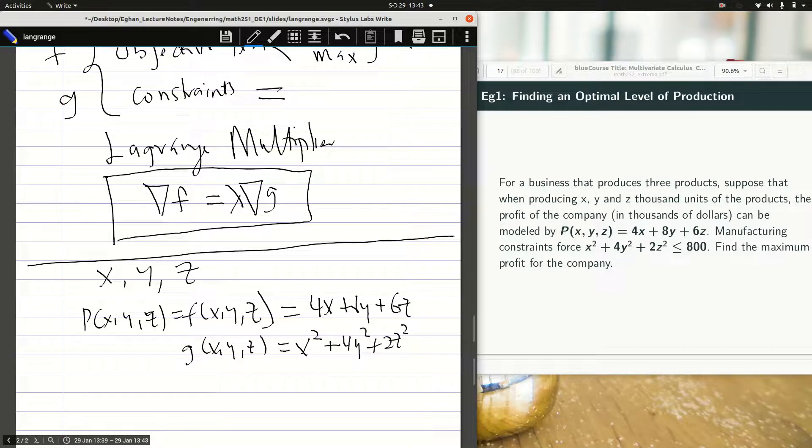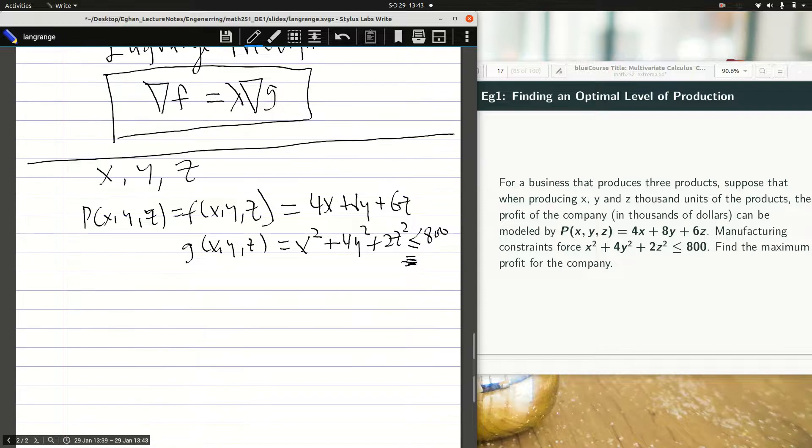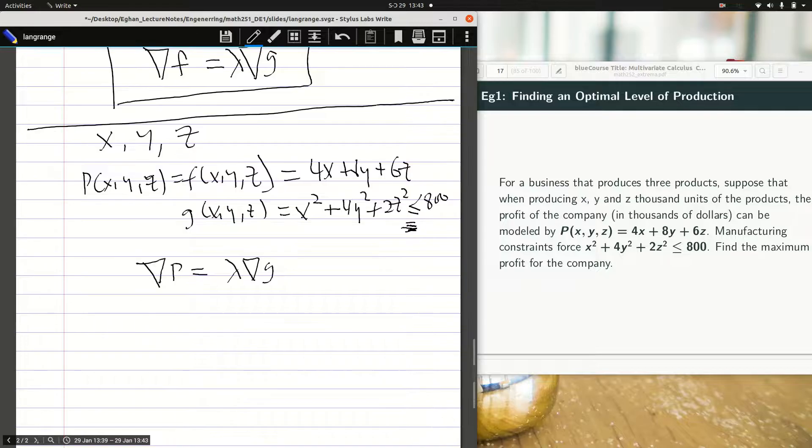It has clearly stated there's a constraint which is G of XYZ equal to X squared plus 4Y squared plus 2Z squared should be less or equal to 800. So I can solve for equality aspects of the constraints using Lagrange multiplier. How would I do that? My grad of P should be equal to lambda my grad of G. Grad is derivative as we fully considered, and so it means that partial derivative of P with respect to all the variables given the same thing to my constraint.